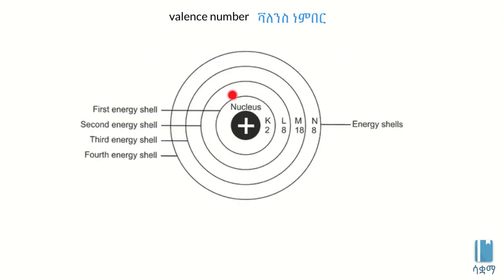Electrons are distributed in shells around the nucleus. The first shell is the K shell, the second is the L shell, and the third is the M shell. The valence electrons are in the outermost shell.